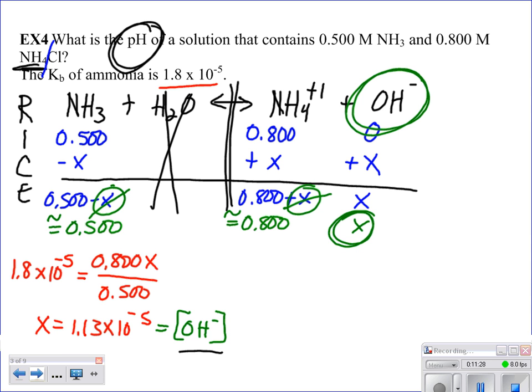So the way I would probably approach this, and there's more than one right way, is I would say that my pOH equals a negative log of my hydroxide ion concentration. So the negative log of 1.13 times 10 to the negative 5th. So my pOH is going to equal 4.95.